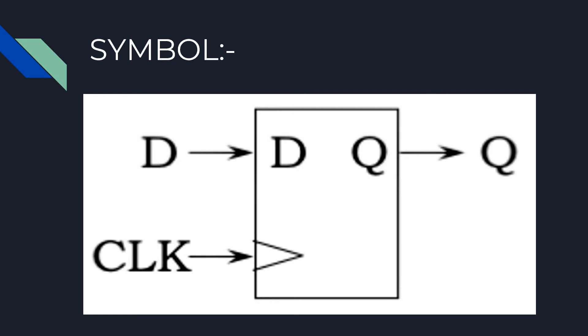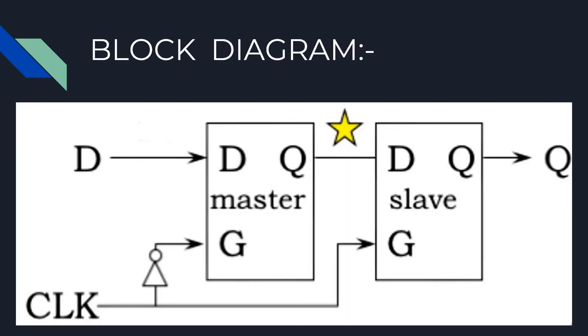Let us see how the register implements its functionality. Before that, let's look into the block diagram. The clock signal is connected to the gate inputs of the master and slave latches as you can see in the screen.